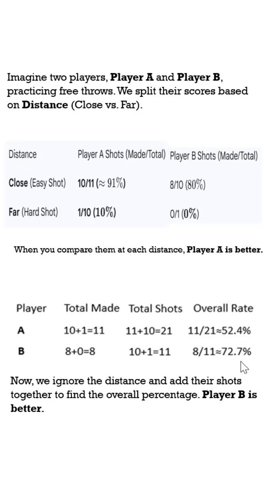Player A is looking better in all individual aspects, but when you combine the totals, Player B is looking better overall. This is what is called Simpson's Paradox.